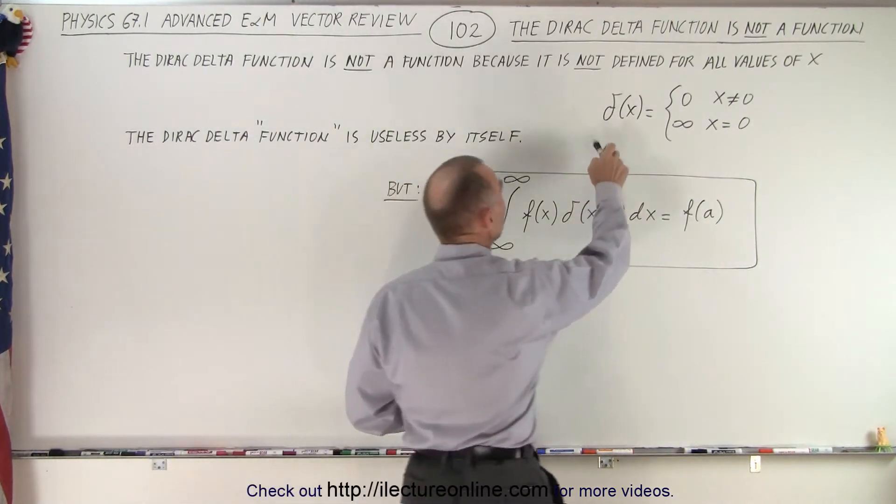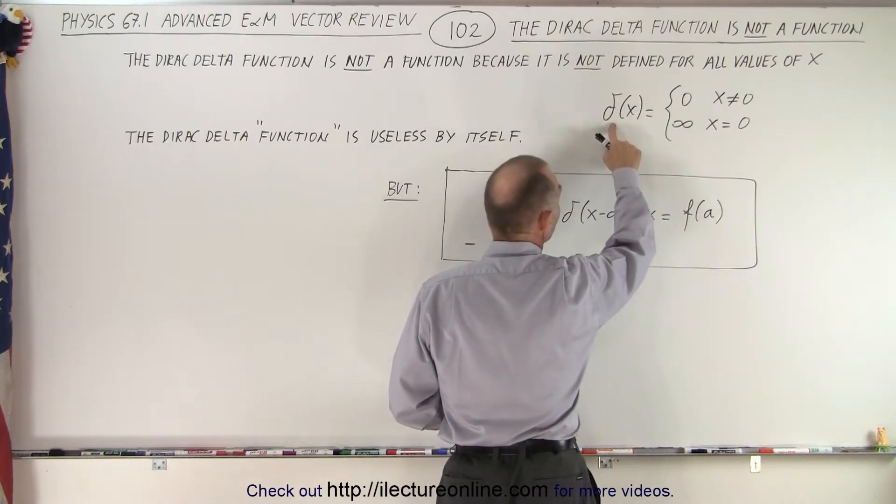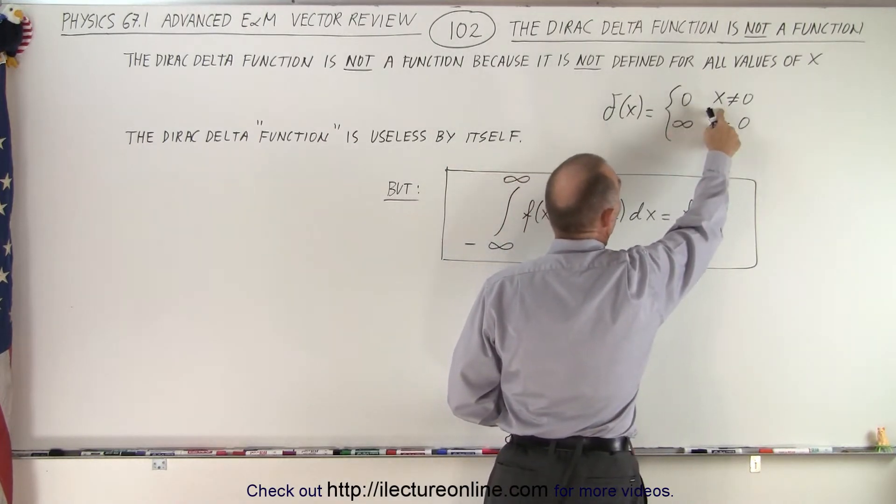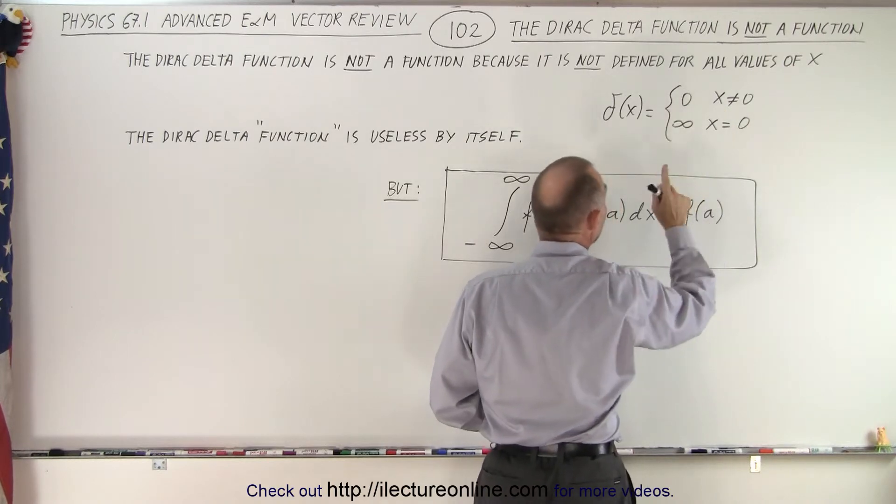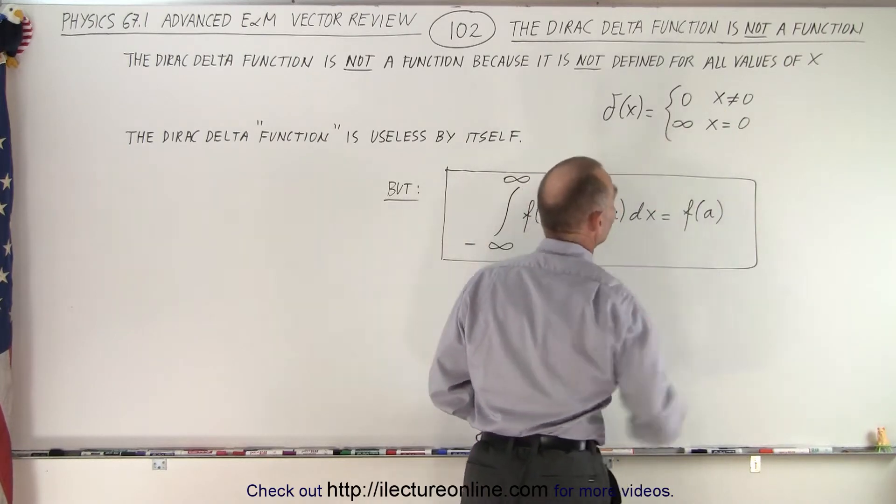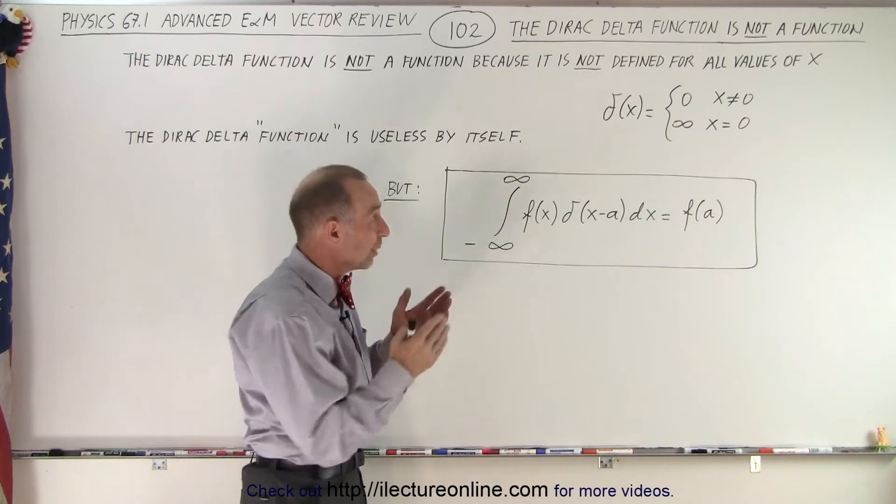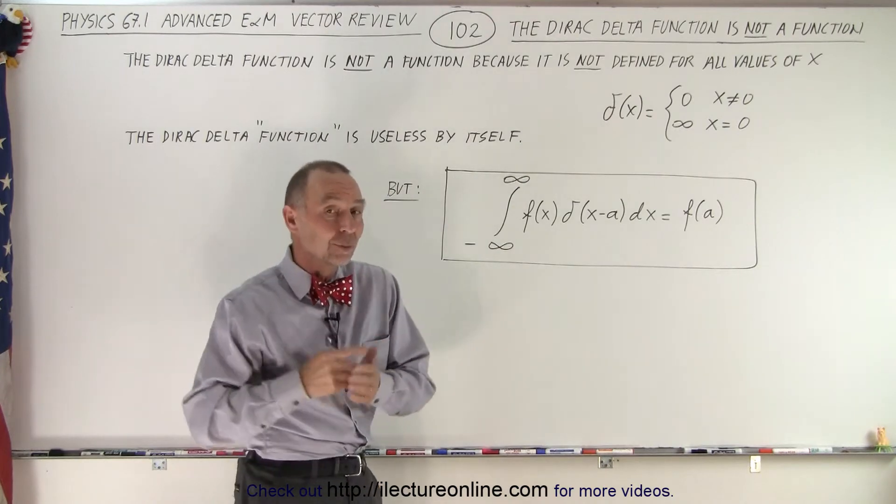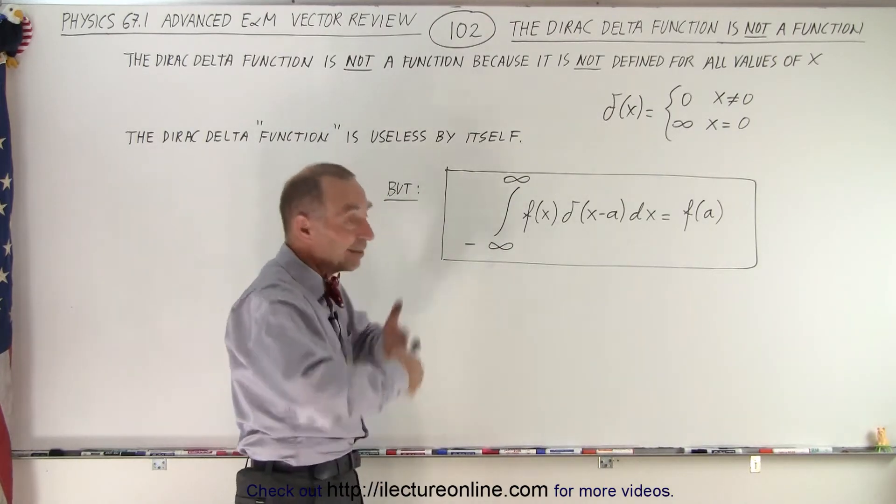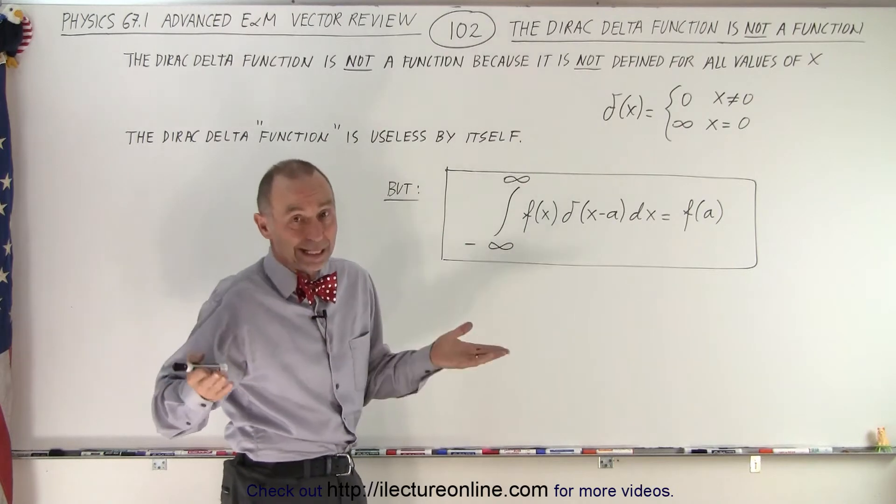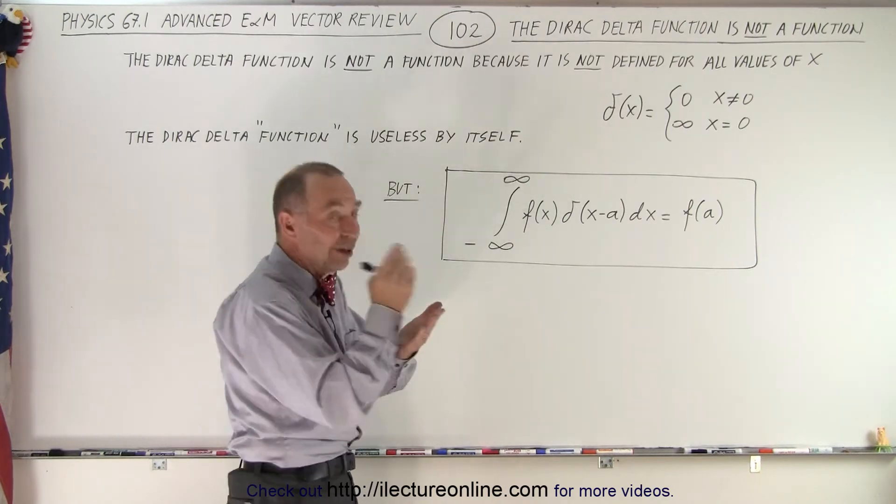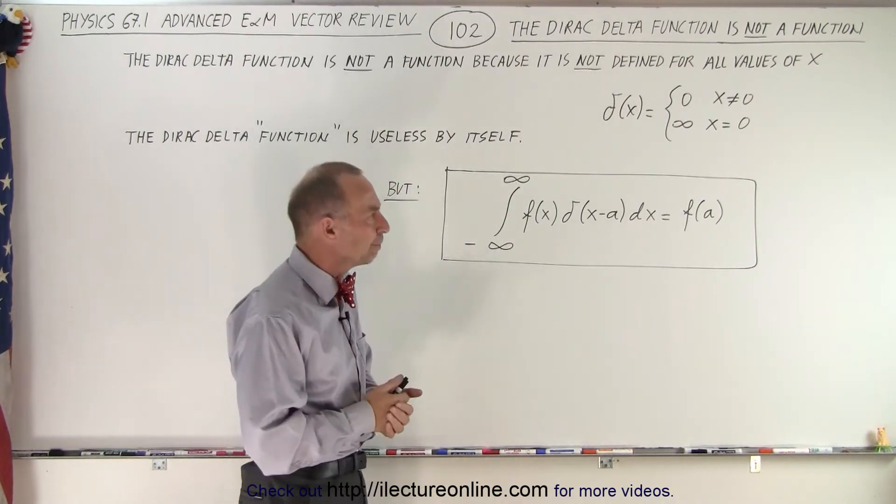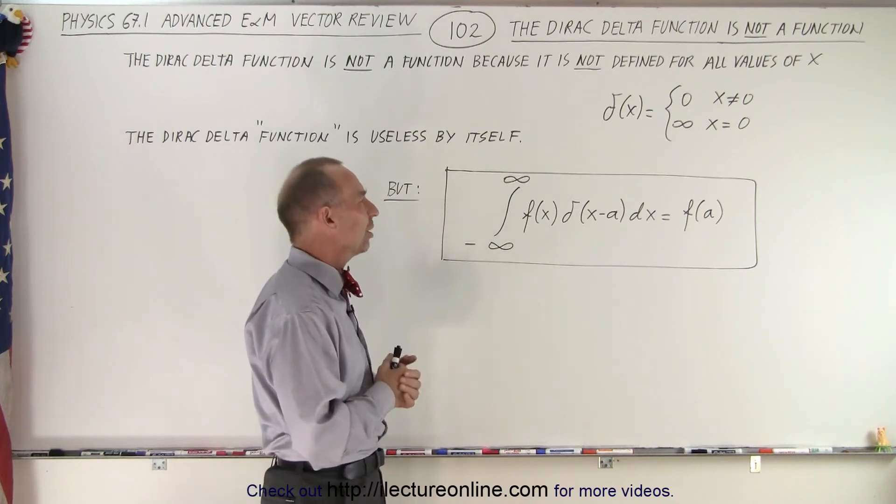We know that the delta function is equal to 0 for all values of x not equal to 0, and it's equal to infinity when x is equal to 0. So it's only evaluated at that one particular value for x when x equals 0, and at that point it's infinite. So it's either 0, meaning nothing, or infinite for the one value that has any sort of meaning. So we cannot call that a function.